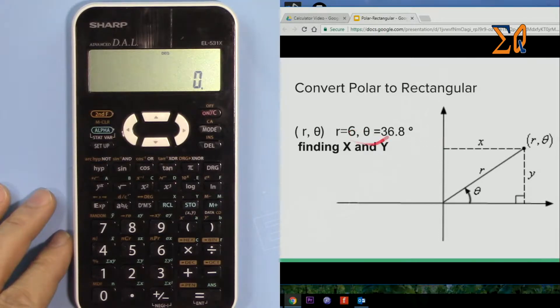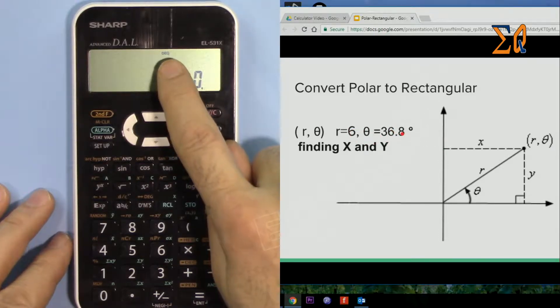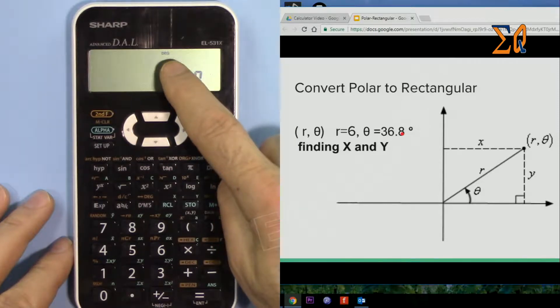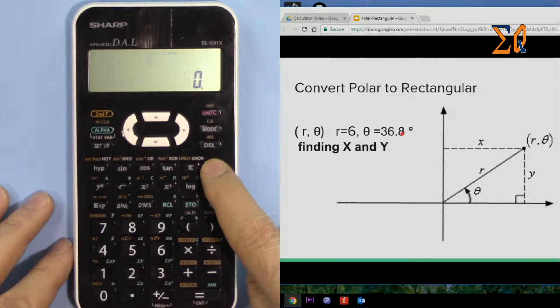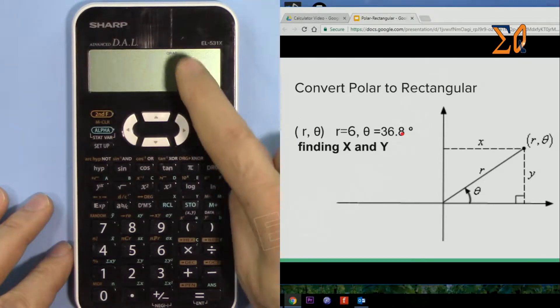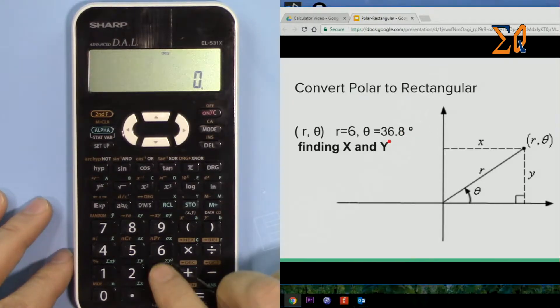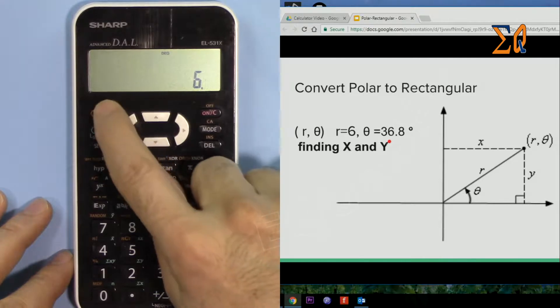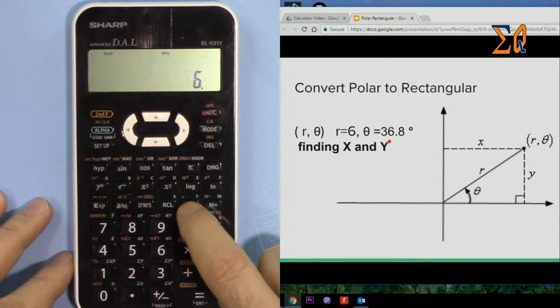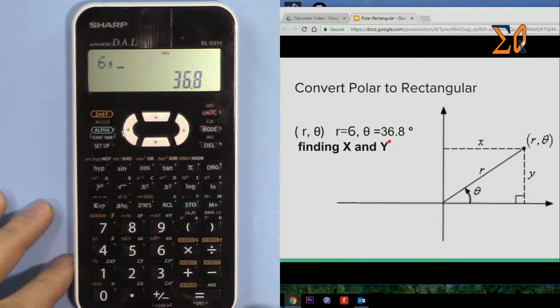Because this is in degrees, the system must be in degree mode. If it's not, just press this button - it cycles through radian, gradient, and degree. So it's in degree mode now. Enter 6, then second function, and press this button that has comma. So 6 comma 36.8. Now we want it in X and Y. This button with shift 9 is X and Y conversion. You see second function appear. Now X is 4.80.